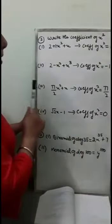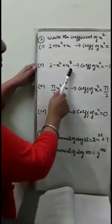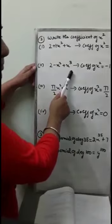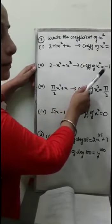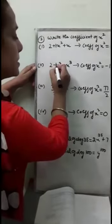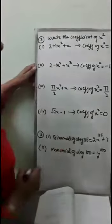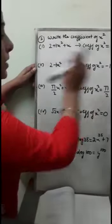In the second part, the expression is 2 minus x squared plus x cubed. What is the coefficient of x squared? Since there is no explicit number, there is supposed to be a 1, but it is negative, so the coefficient of x squared is minus 1.